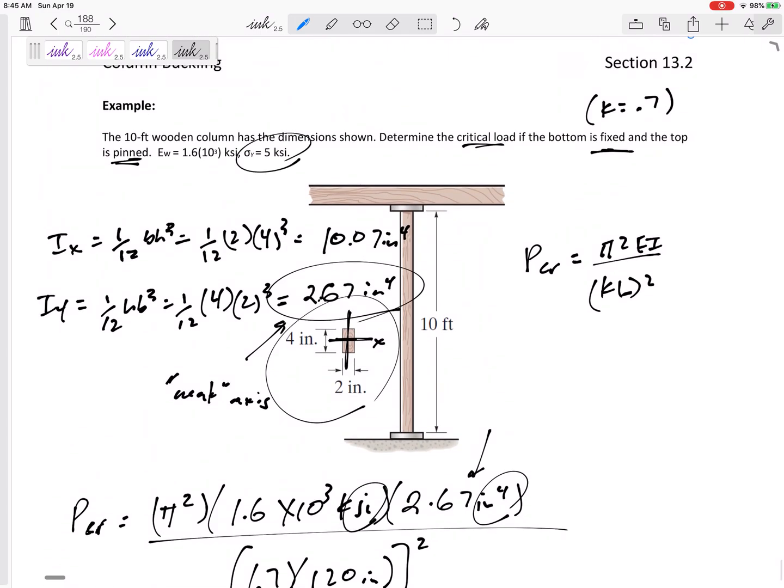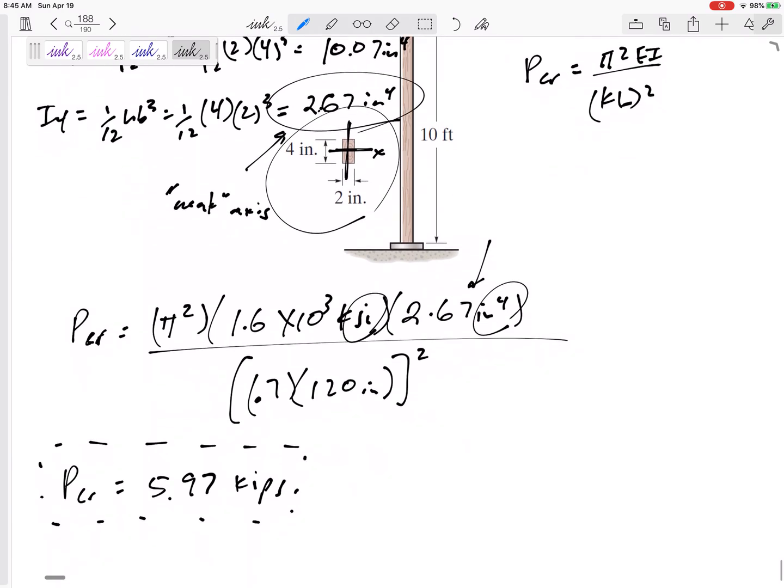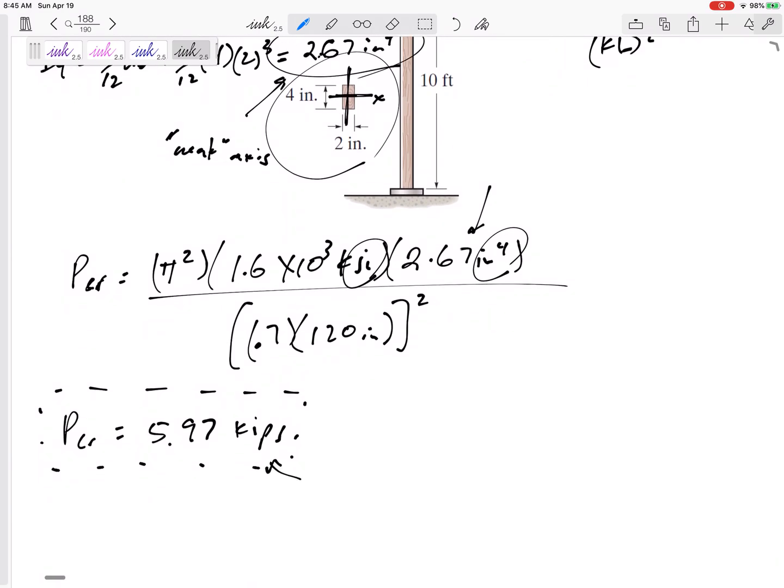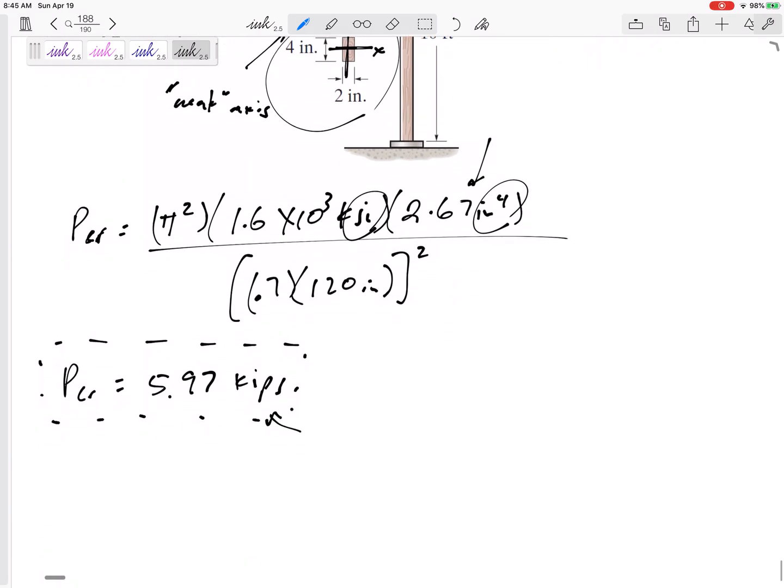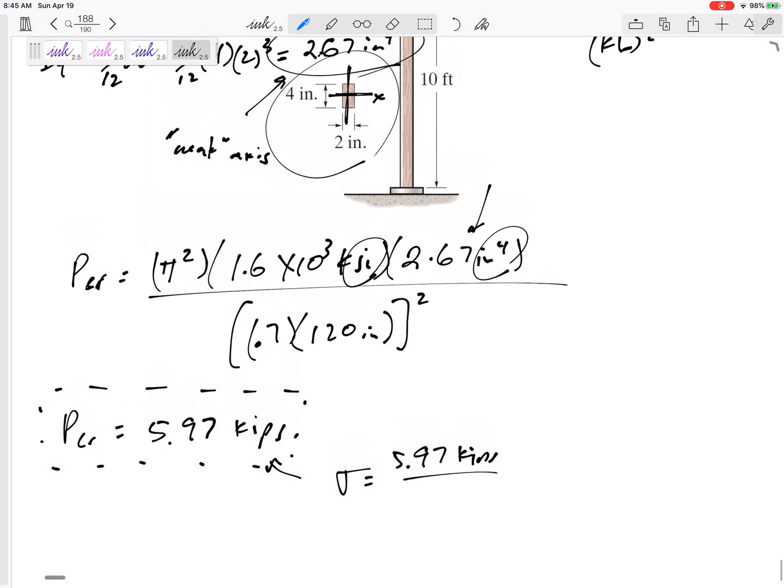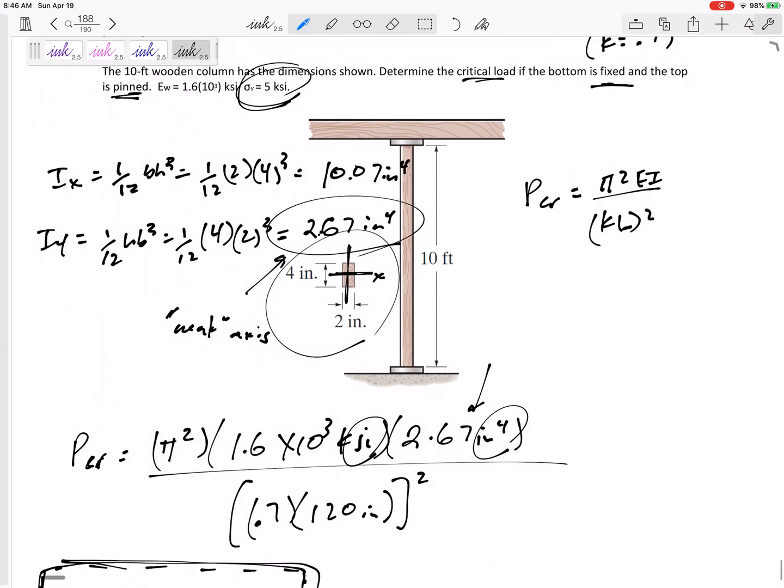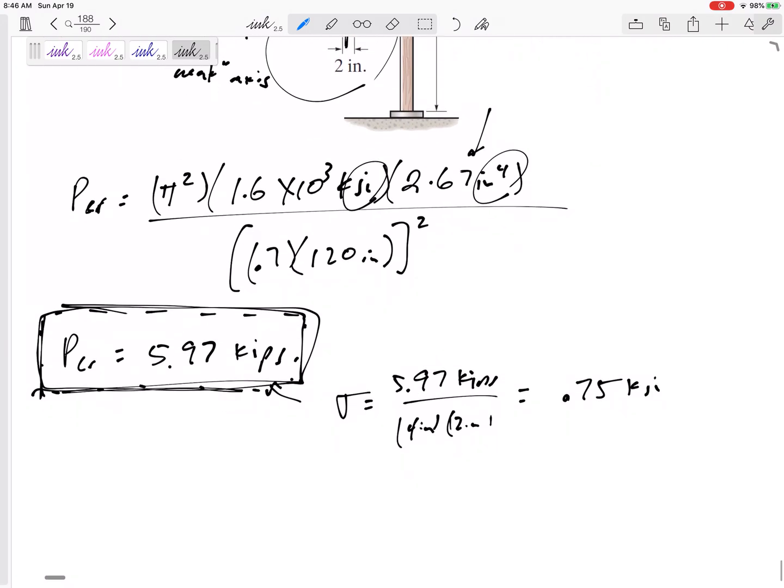But let me check. It's going to yield at 5 KSI. Now that's not KSI, this is just a force. What stress does that correspond to? 5.97 Kips divided by the area of four inches by two inches. So this is 0.75 KSI. So yeah, it definitely buckles at 0.75 KSI well before it will crush or yield at 5 KSI.